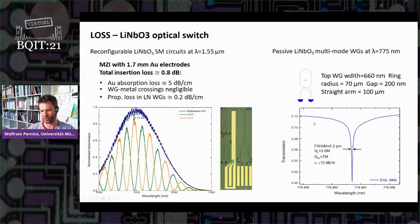What's nice, however, is if you go to shorter wavelengths in the visible, these losses get a lot better. So if we measure them with ring resonators, we get Qs of about 7 million or so, which translates into propagation loss on the order of 10 dB per meter, meaning that this approach is also suitable for making larger photonic structures.